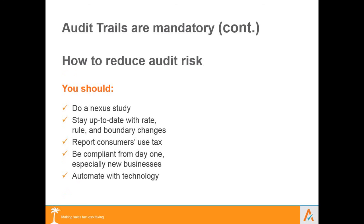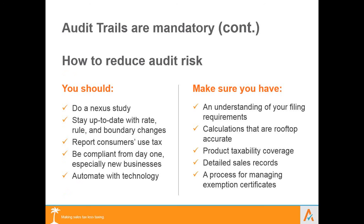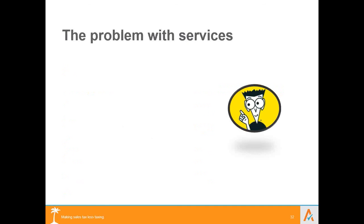Ways to limit your risk: conduct a nexus study if you're expanding, stay up to date with rate and rule changes, compute consumer use tax, and be compliant from day one. If you get hit with an audit and fail with significant penalties, it's too late to be reactive. Automate with technology to make this easier, ensure rooftop-accurate calculations rather than zip-code-based ones, understand product taxability changes, and keep good sales records.